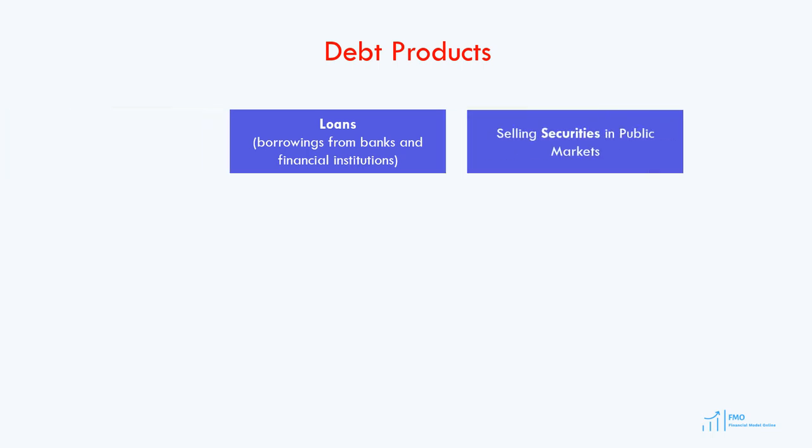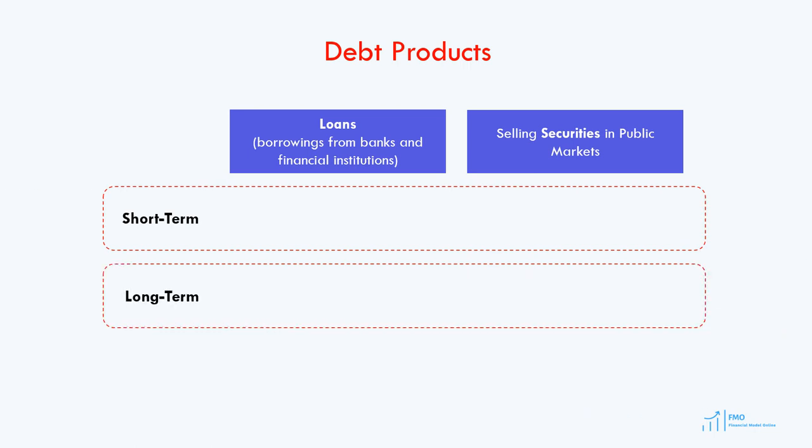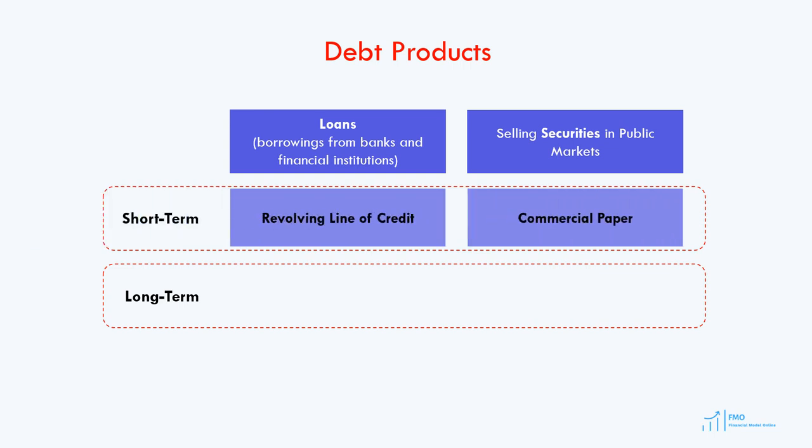We can also divide debt into short-term and long-term debt. An example of a short-term loan is a revolving line of credit, or revolver, which is typically provided by banks. A revolver is a flexible debt product where the loan amount can be drawn, repaid, and redrawn again in any manner and any number of times until the arrangement expires. An example of short-term public securities is commercial paper or notes payable.